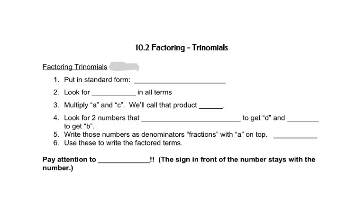The first thing we need to do to factor something with three terms is to put it in standard form. That means we put the x squared first, then the x, then the number: ax squared plus bx plus c. Then we need to look for a greatest common factor between all three terms. We'll pull that out and then deal with what's left.